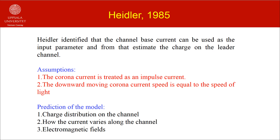Now let us consider the current generation model introduced by Heidler. Heidler used the same concept introduced by Wagner. However, the breakthrough is Heidler's identification that the channel base current can be used as an input parameter and from that estimate the charge on the leader channel. In constructing the model, he treated the corona current as an impulse current and the downward moving corona current speed is assumed to be equal to the speed of light. The model managed to predict the charge distribution on the channel, how the current varies along the channel, and the electromagnetic fields. One criticism is the treatment of the corona current as a delta impulse, which introduced a discontinuity at the front of the return stroke current — it is doubtful whether such current discontinuities exist in nature.